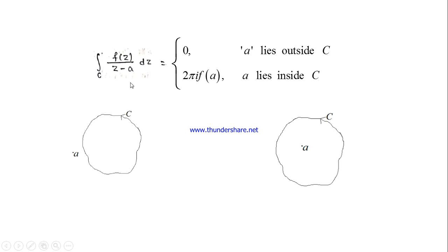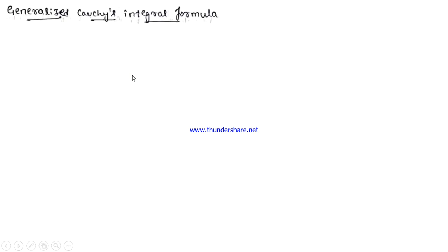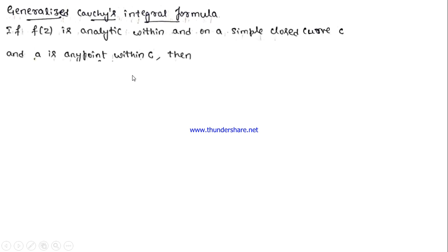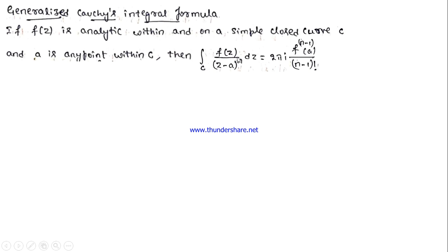If you have (z − A)² or (z − A)³ in the denominator, you should use the generalized Cauchy's integral formula. It states: if f(z) is analytic within and on a simple closed curve C and A is any point within C, then integration of f(z)/(z − A)^n dz = 2πi · (n−1)th derivative of f(z) evaluated at z = A, divided by (n−1)!.